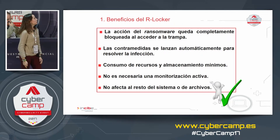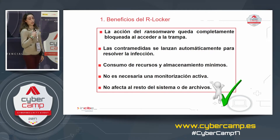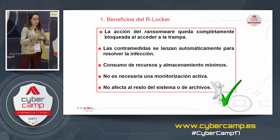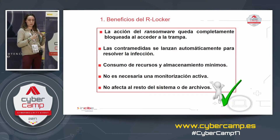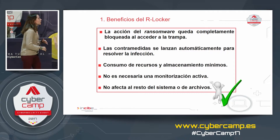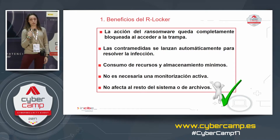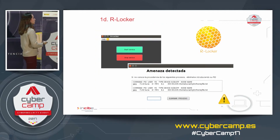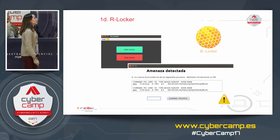What are the benefits of R-locker? The ransomware becomes fully blocked. Countermeasures are launched automatically. The writing process unblocks itself without requiring constant system monitoring. Countermeasures are implemented, the tool does not consume significant resources, and it does not affect the rest of the files. If a user accidentally opens the FIFO, the message will simply say the file cannot be opened.